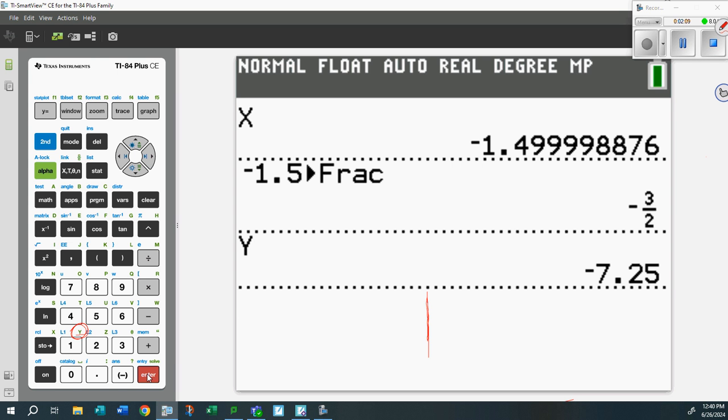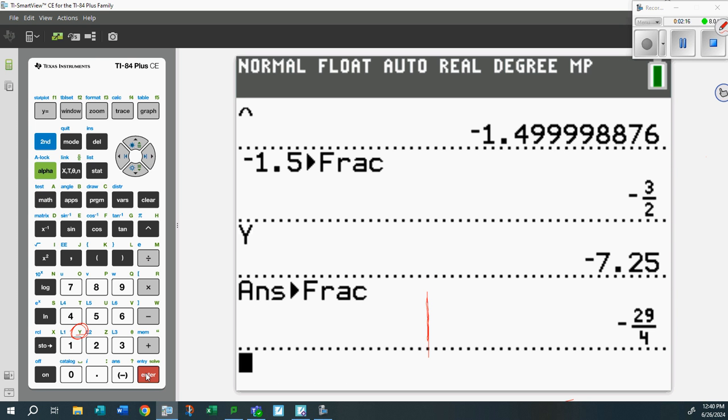Hit ALPHA ENTER - there's -7.25. Again, MATH FRAC, and there's your fraction. This is a really powerful way to figure out some pretty numbers on your vertex.